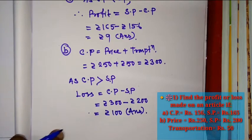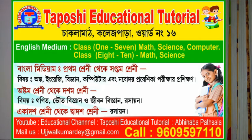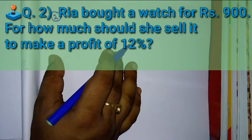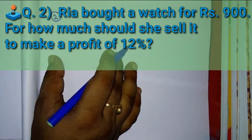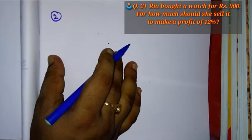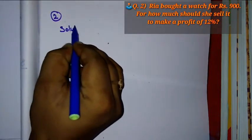I hope you clearly understood. Now, another problem regarding profit and loss. Problem 2: Rhea bought a watch for Rs. 900. For how much should she sell it to make a profit of 12%? Also, Problem 3: a shopkeeper bought a car for Rs. 80,000 and sold it at a loss of 15%. Find the selling price of the car.